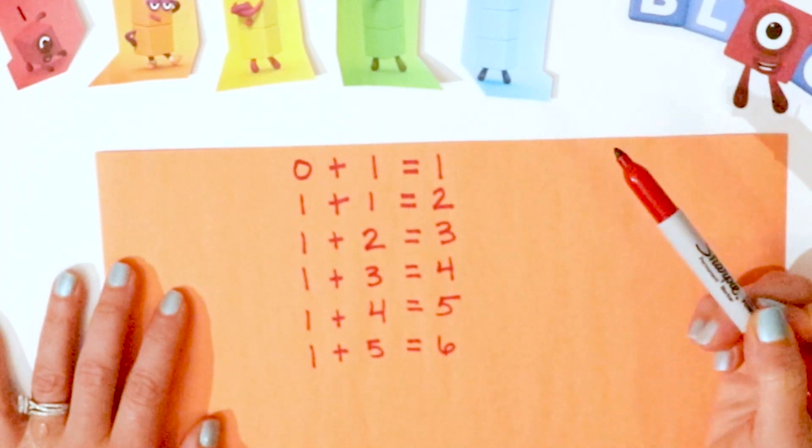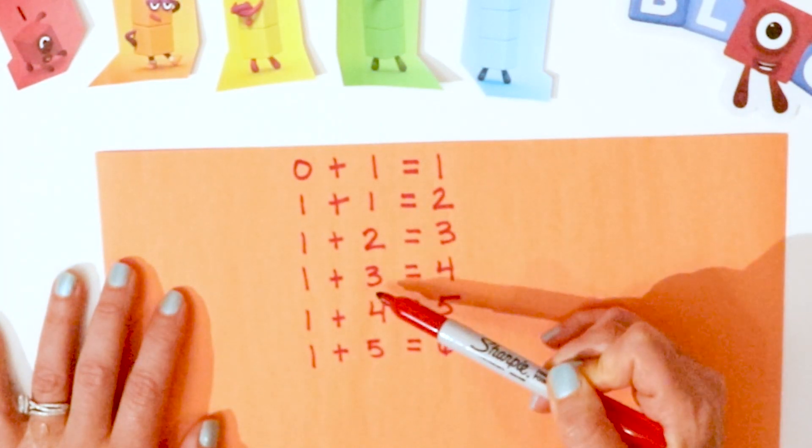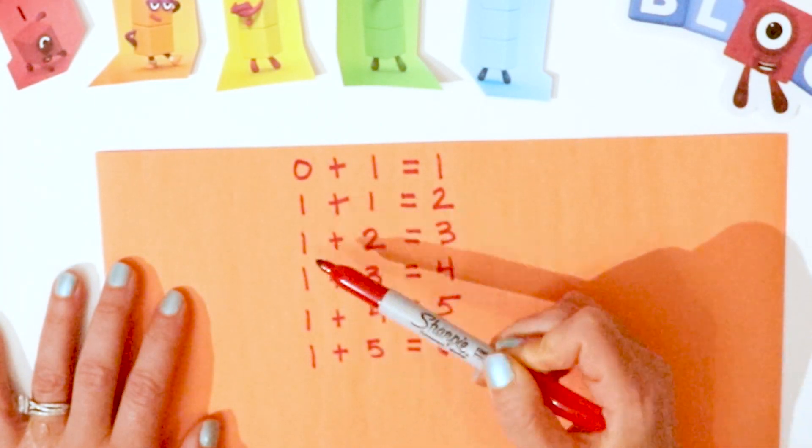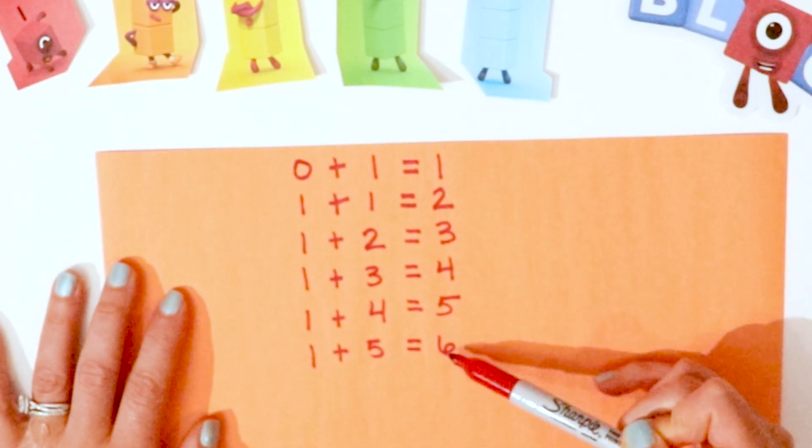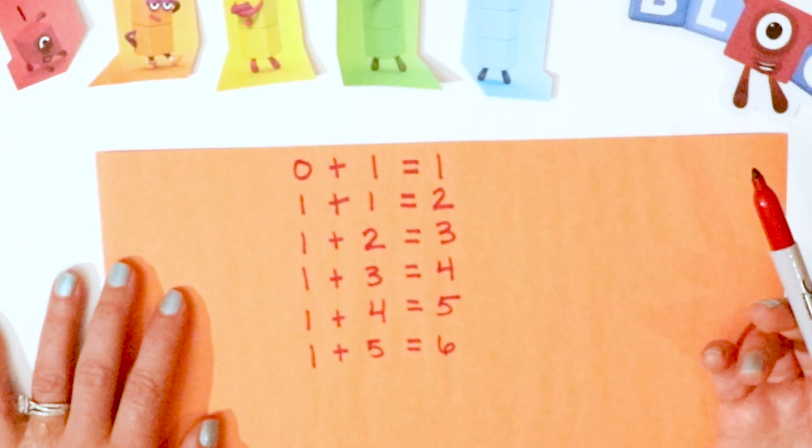Did you notice that when you say one, two, three, four, five, and you're adding by one, it turns into one, two, three, four, five, six? Isn't that a cool pattern?